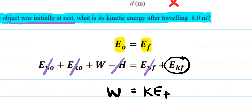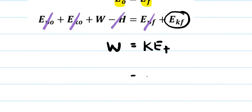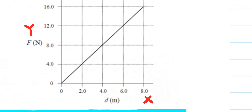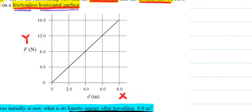Since we need to find the kinetic energy after traveling 8 meters, the kinetic energy is just equal to the work done. So if we can figure out what the work equals, we've solved for kinetic energy. Now let's go to the graph — work is equal to force times distance.